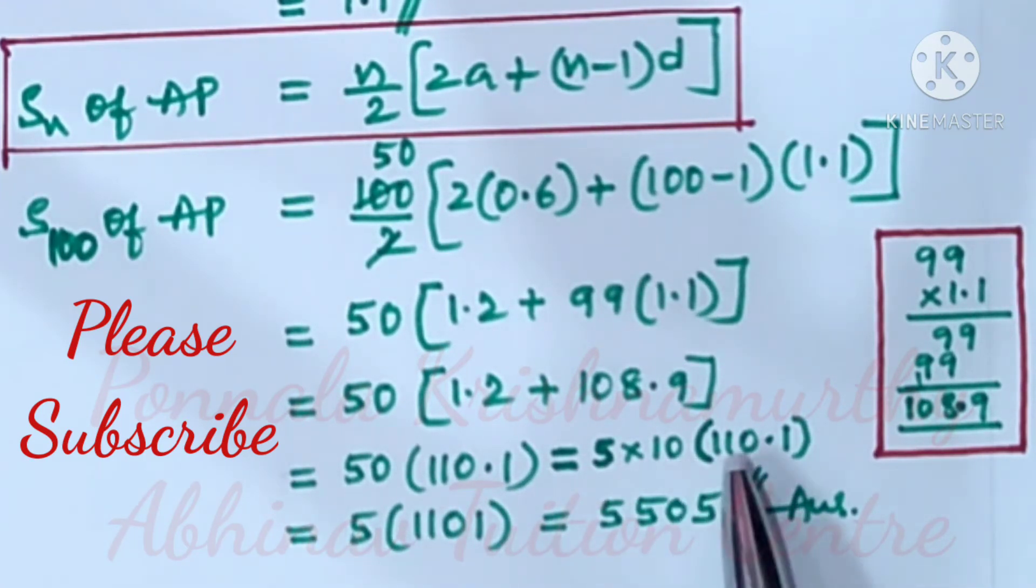And 10 into 110.1 becomes 1101. If we multiply this by 10, this point moves to the right-hand side one step, then it becomes 1101. That is equal to 5 into 1101 is equal to 5505 answer.